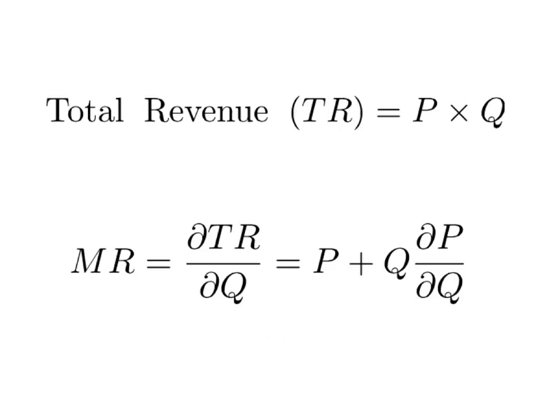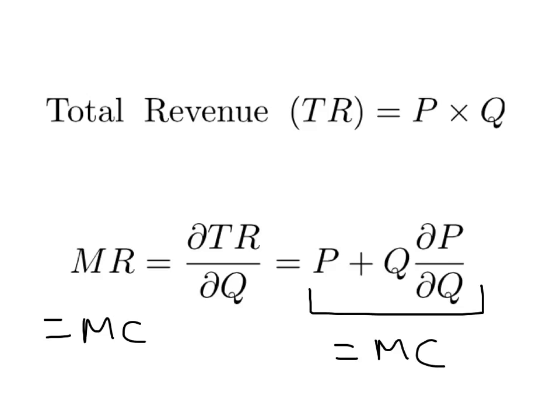So for a monopoly, we simply set marginal revenue equal to marginal cost to maximize profits — that is, we set this term equal to marginal cost. That gives us our profit maximizing quantity. We saw that diagrammatically in the last presentation, and now we've also seen it mathematically.